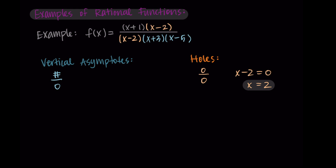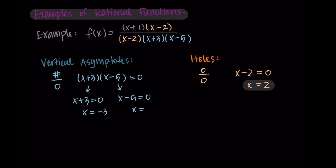So x equals 2 is where the hole in the graph occurs. You can check this by substituting 2 into those terms — 2 minus 2 is 0, giving us a 0 in both the top and the bottom. Now for the vertical asymptotes, we set the remaining denominator terms equal to 0: x plus 3 equals 0 gives x equals negative 3, and x minus 5 equals 0 gives x equals 5. So x equals negative 3 and x equals 5 are our two vertical asymptotes.